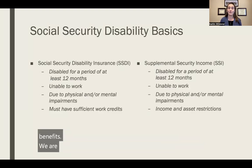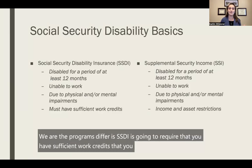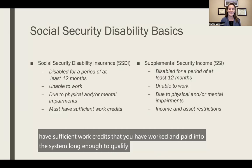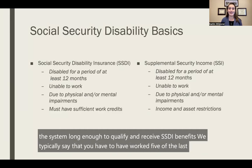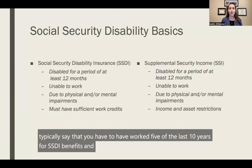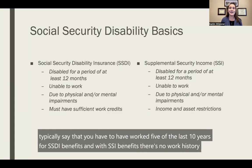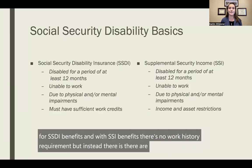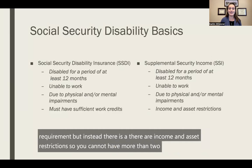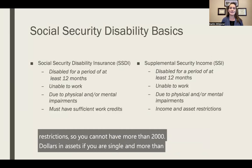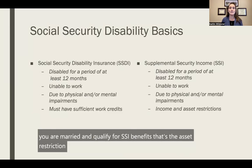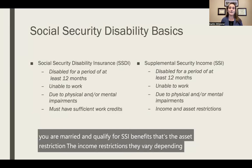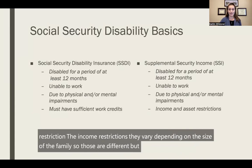Where the programs differ: SSDI requires that you have sufficient work credits — that you have worked and paid into the system long enough to qualify. We typically say you have to have worked five of the last 10 years for SSDI benefits. With SSI benefits, there's no work history requirement, but instead there are income and asset restrictions. You cannot have more than $2,000 in assets if you are single, or more than $3,000 in assets if you are married. The income restrictions vary depending on the size of the family.